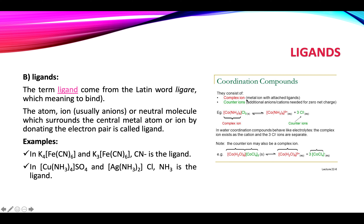Coordination compounds consist of complex ions — metal ions with attached ligands — and counter ions: additional ions or cations needed for zero net charge. The portion in square brackets is the complex ion; whatever else is present to neutralize the charge is the counter ion. In water, coordination compounds behave like electrolytes. The complex ion exists as the cation, and the chloride ions are separate counter ions.